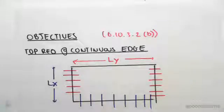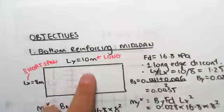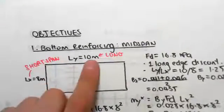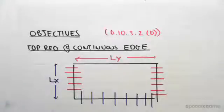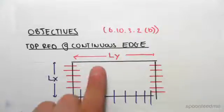For the bottom reinforcing, we had this slab over here. Ly was 10 meters and Lx is 8 meters, Ly being the long edge and Lx being the short span. So Lx is the short span, Ly is the long span.